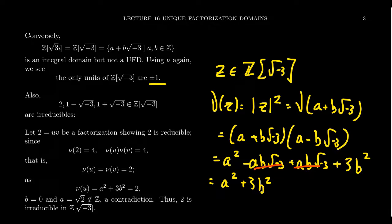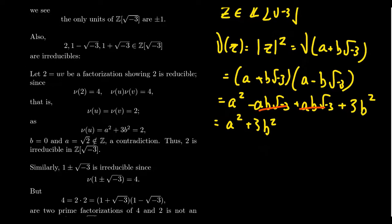Now consider the numbers 2, 1 − √(-3), and 1 + √(-3). I claim these are irreducible — they cannot be factored further. Let's prove that 2 is irreducible. I'll be careful to use the word irreducible as opposed to prime. Every prime in a domain is irreducible, but the reverse is not true, and this example will demonstrate that.